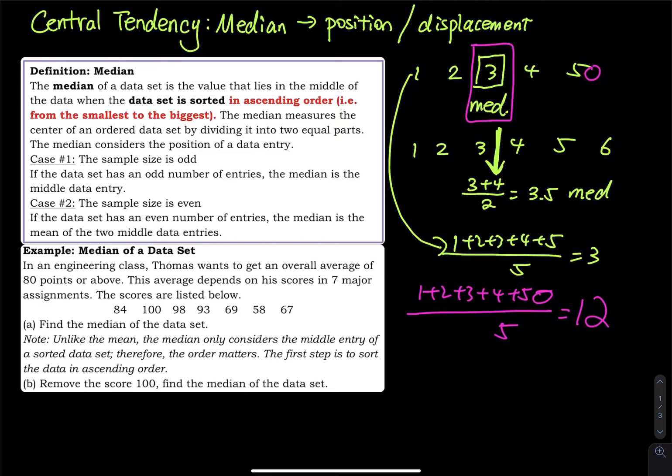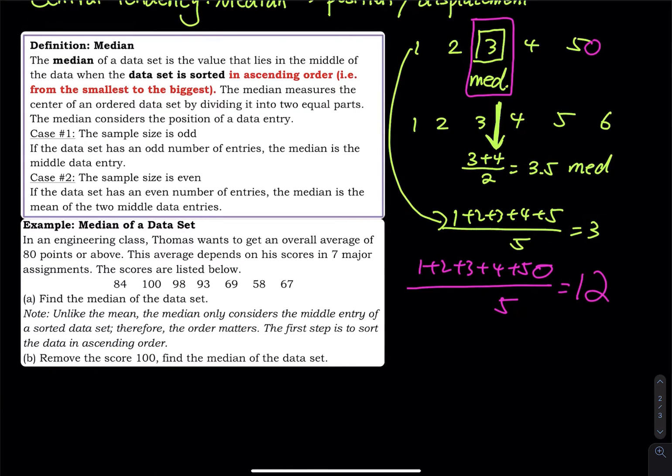All right, so the median of a data set, so we are using the same data set. So we are looking for the median. All right, so here is what I am going to do now. Okay, I see that there are seven data. Okay, so seven data, that means my median is right here. Is this correct?